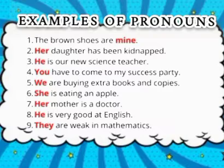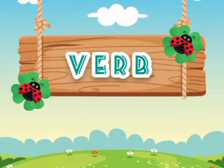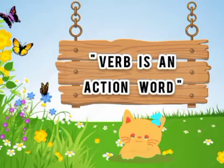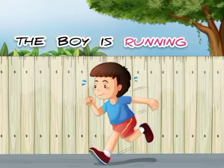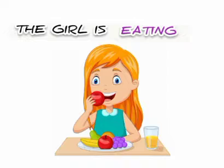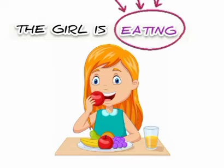I hope you have understood the concept of pronouns. Today we will learn about verbs, so let's start. A verb is an action word. In the first picture, the boy is running, so 'running' is a verb. In the next picture, the girl is eating, so 'eating' is a verb.